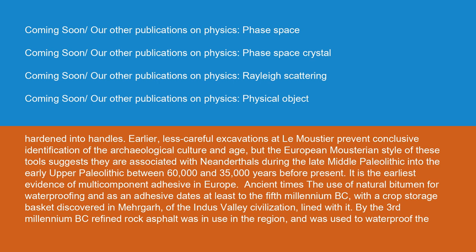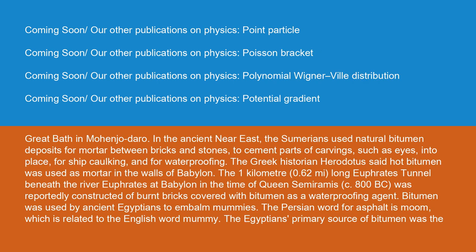The use of natural bitumen for waterproofing and as an adhesive dates at least to the 5th millennium BC, with a crop storage basket discovered in Mehrgarh of the Indus Valley Civilization lined with it. By the 3rd millennium BC, refined rock asphalt was in use in the region and was used to waterproof the Great Bath in Mohenjo-Daro. The Sumerians used natural bitumen deposits for mortar between bricks and stones, for ship caulking, and for waterproofing. The Greek historian Herodotus said hot bitumen was used as mortar in the walls of Babylon. The Euphrates tunnel beneath the river Euphrates at Babylon, in the time of Queen Semiramis c. 800 BC, was reportedly constructed of burnt bricks covered with bitumen as a waterproofing agent.